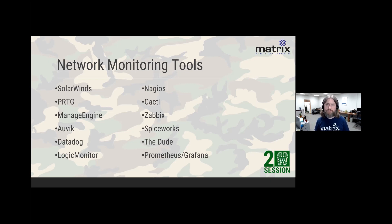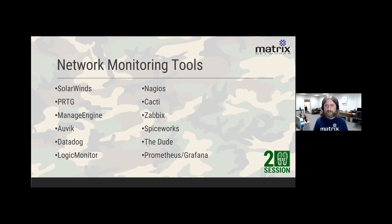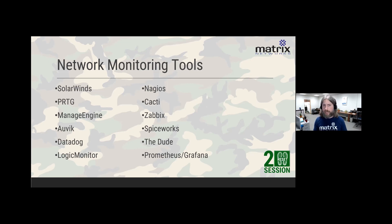On the free and open-source side: Nagios has been around forever; Cacti — which I was amazed to find still has recent GitHub commits — is near and dear to my heart from personal use; Zabbix is another great one; Spiceworks; MikroTik's The Dude; and if you want to roll your own, Prometheus is a time-series tool and Grafana is a gorgeous GUI overlay for time-series data. There are a zillion of these tools at different price points and feature sets. You should always have something watching your equipment.